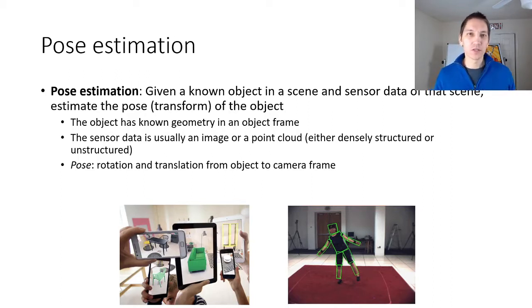The pose is the transform from the object's known coordinate frame to the camera frame and the object has to have known geometry in that local frame. The sensor data is usually an image or a point cloud and we will talk about either densely structured point clouds or unstructured point clouds.